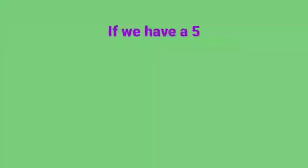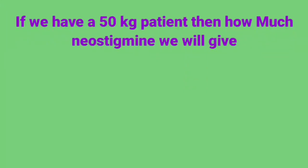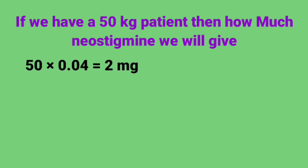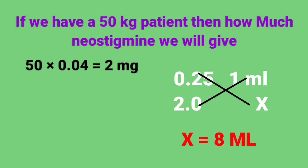Another one: if we have a 50 kg patient, then how much neostigmine will we give? 50 multiply by dose 0.04 mg is equal to 2 mg. Now again we will convert it to ml. It is so easy: 0.25 is available in 1 ml, then 2 mg will be present in — cross multiply it — the answer will be 8 ml. It means if we have a 50 kg patient, we will give 8 ml neostigmine of that diluted syringe.